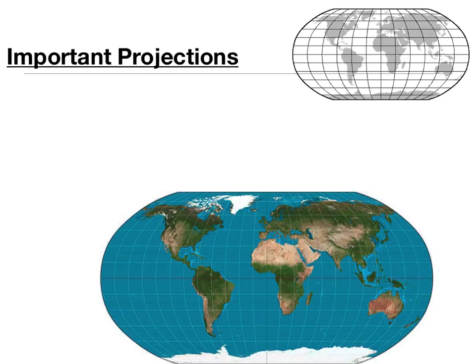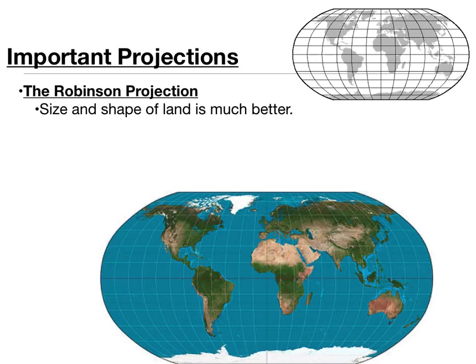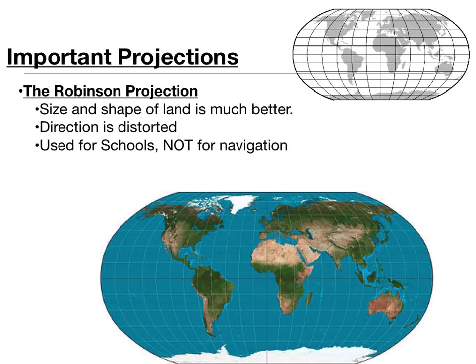The next important projection is called the Robinson projection. In the Robinson projection, the size and shape of the land is much better than the Mercator projection, so it's much more true to form in terms of size. Now we can see how Africa appears to be a much larger landmass than Greenland. However, direction is distorted, so it is not used in navigation at all. This map is really just made for schools and is not a navigational chart like the Mercator projection.